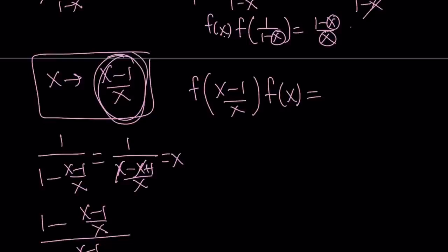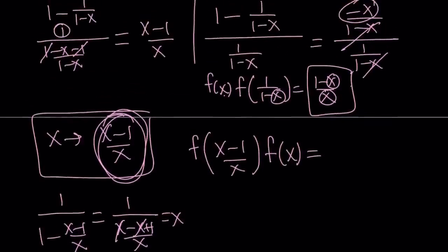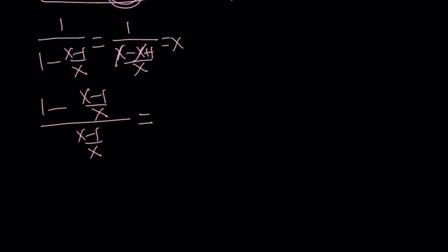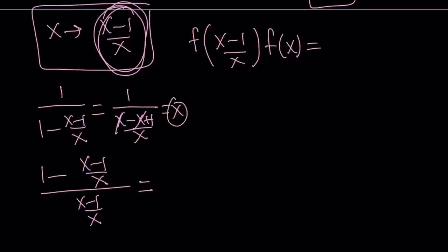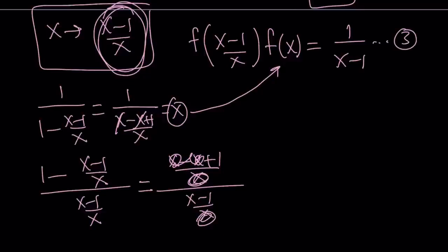The right-hand side is 1 minus x over x with x replaced by x minus 1 over x, so it becomes 1 minus (x minus 1 over x) divided by (x minus 1 over x). Making a common denominator gives x minus x plus 1 over x, divided by x minus 1 over x. That simplifies to 1 over x, and after cancellation we get 1 over x minus 1. Let's call this equation number 3.